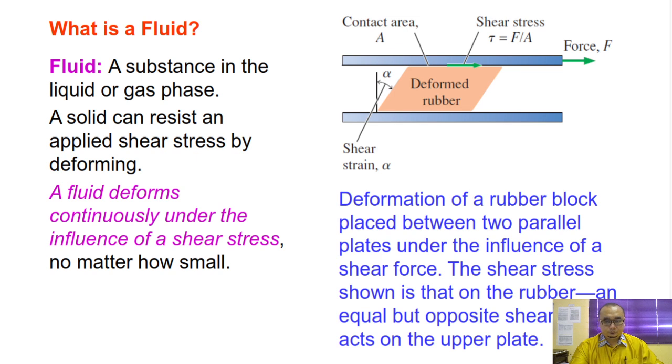What is fluid? Fluid is a substance in the liquid or gas phase. So sama ada kita punya substance tu dalam bentuk liquid ataupun dalam bentuk gas, kita consider dia sebagai fluid. A solid can resist an applied shear stress by deforming. Meanwhile, a fluid deforms continuously under the influence of shear stress no matter how small. So kita tahu bahawa solid ni dia resistant terhadap shear stress. Tetapi kalau fluid pula dia punya deform, perubahan bentuk dia akan berterusan berlaku apabila diberikan shear stress.